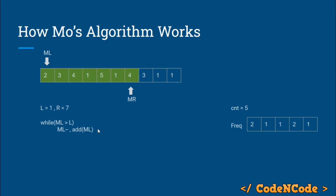So there are two while loops used to extend the range, and five is the answer for this query. There are two ways to extend — towards the right or towards the left.